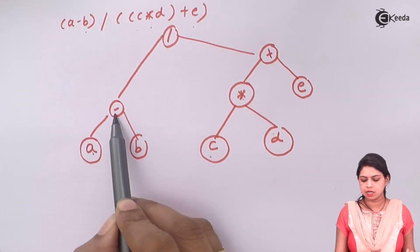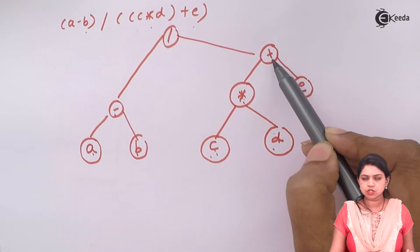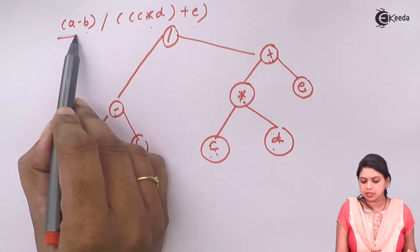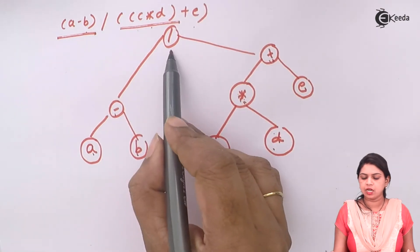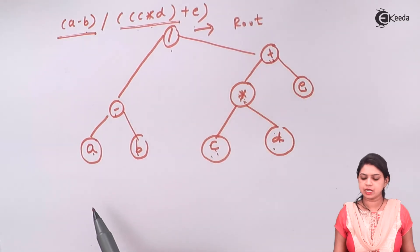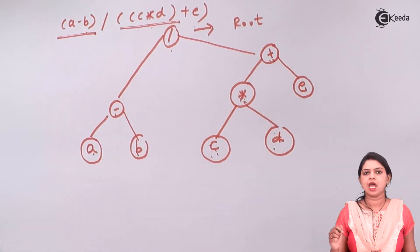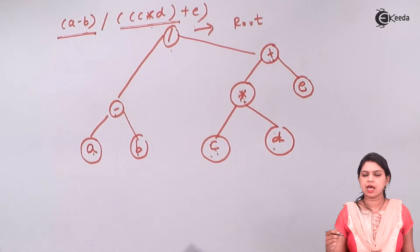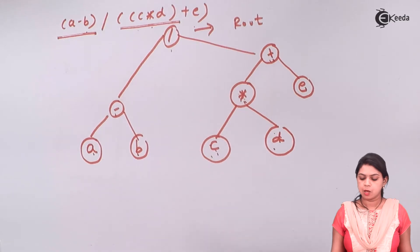So we draw the binary tree as follows: A minus B forms the left subtree, and C*D plus E forms the right subtree. Both the left and right subtrees are joined by the division sign. Therefore, division is the root of the tree, while minus and plus are the left successor and right successor respectively, since they are non-empty.